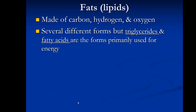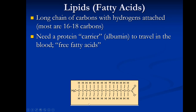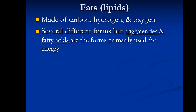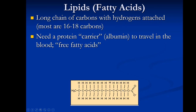Fats or lipids are also made up of carbon, hydrogen, and oxygen. Triglycerides and fatty acids are the forms mainly utilized in energy transfer. A fatty acid is a long chain of carbons with hydrogens attached, generally with an even number of carbons — typically 16, 18, 20, or 22. Fatty acids don't freely float in the blood; they need to be carried by albumin, which is a plasma protein.